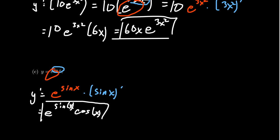Our derivative is e to the sine of x times cosine of x, and there's really not much more you can do to simplify that. This gives us some examples of computing derivatives of exponential functions using the chain rule, which we often have to use when calculating derivatives of exponential functions.